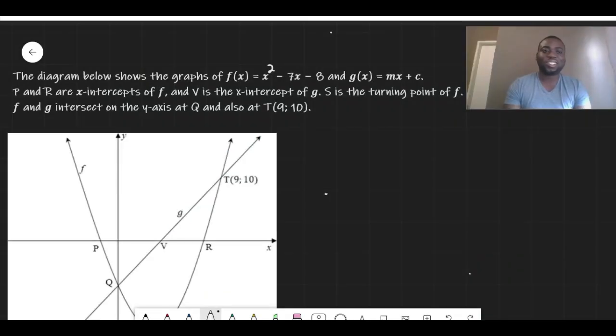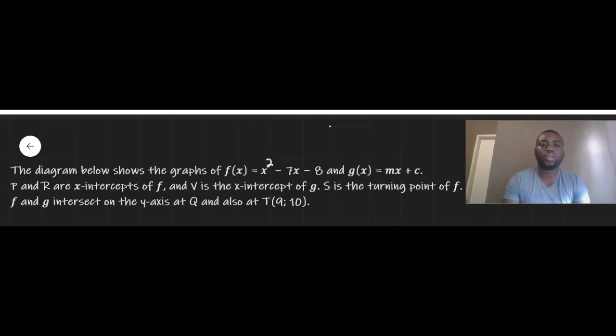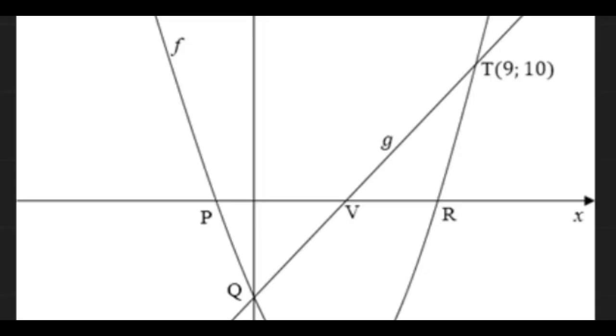Let's get into it. The question here says the diagram below shows the graph of f(x) = x² - 7x - 8 and g(x) = mx + c, where P and R are your x-intercepts. So the focus of this is our P over here and our R over there.